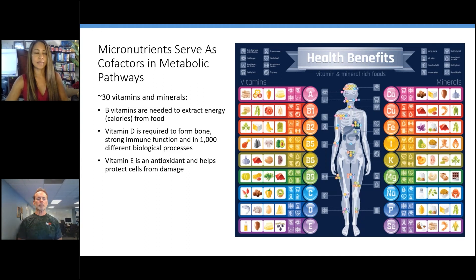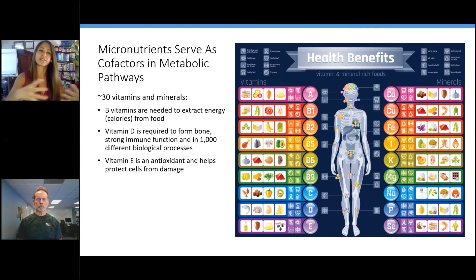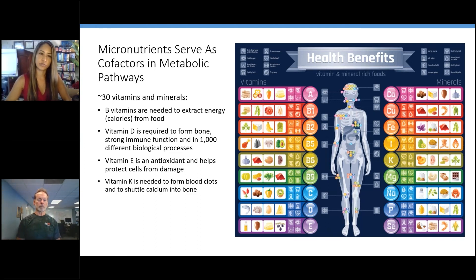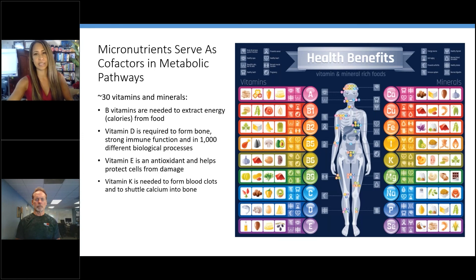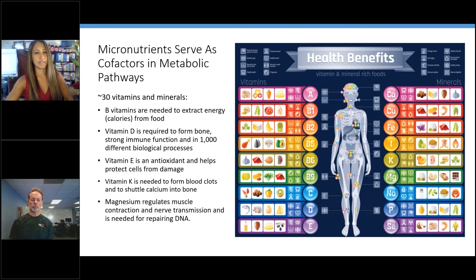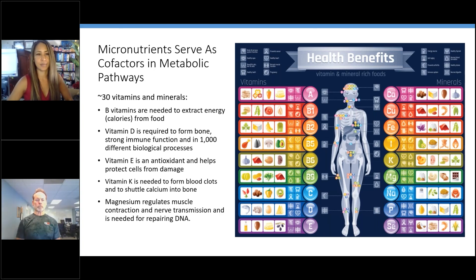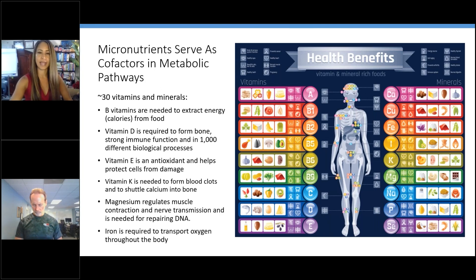Vitamin E is actually a family of vitamins — it's an antioxidant, which means it helps protect cells from damage. Your cells have a lipid bilayer, and vitamin E protects that lipid bilayer and all other components from being damaged. Vitamin K comes in two forms — it's a fat-soluble vitamin needed to form blood clots and to shuttle calcium into bone. We'll go deeper into vitamins K, E, and D as we go along. Magnesium is an essential mineral involved in 300 different reactions in the body — it regulates muscle contraction, nerve transmission, and is also needed to repair DNA.